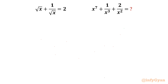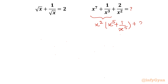If you look at the expression and take x power 2 common out, then this term will become x power 5 plus 1 over x power 5, and then we have 2 over x square. So we will target x power 5 plus 1 over x power 5.